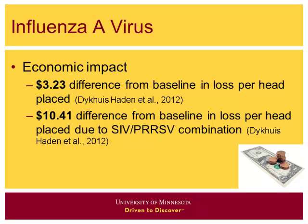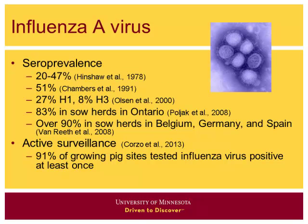Regarding economic impact, in comparison to some of our other diseases, we lack good estimates for influenza virus. One of the more recent estimates for grow-finish specifically is a $3.23 difference from baseline with influenza infection. When we look at a combination of influenza and PRRS, we see a significantly higher estimate, as we'd expect. I've also included a few historical prevalence estimates here — many based on seroprevalence — from three studies in the United States.